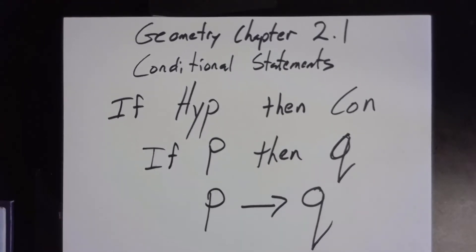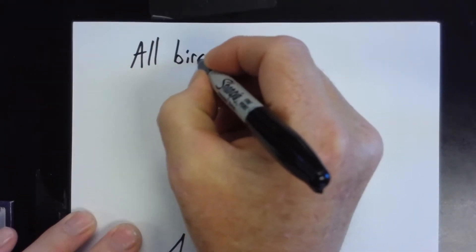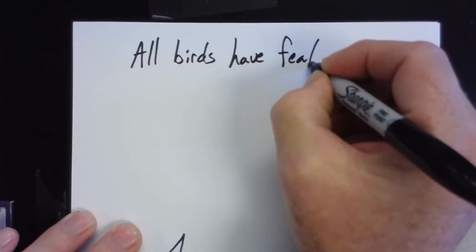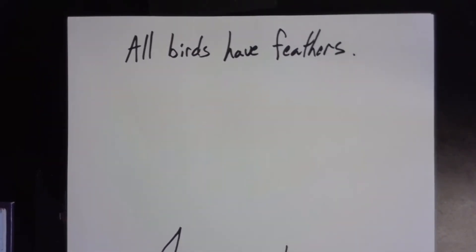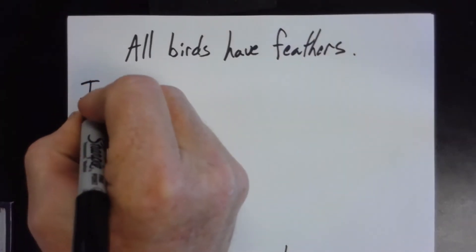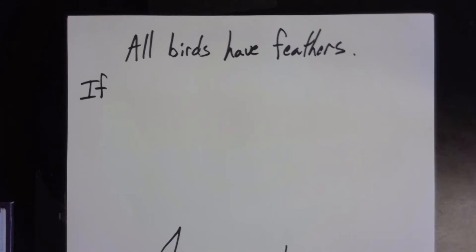What about the flip? If you're in math, then it's fourth period. Or if you are not in math, then it's not fourth period — this can get complicated. Let's start with a simple one: 'All birds have feathers.' That's not in if-then form, but it is a conditional statement and it can be written that way. So we can write: if it's a bird, then it has feathers.